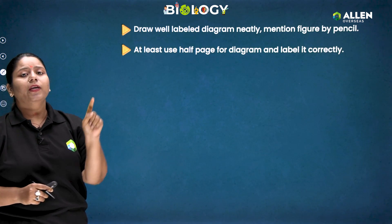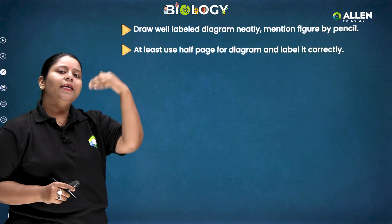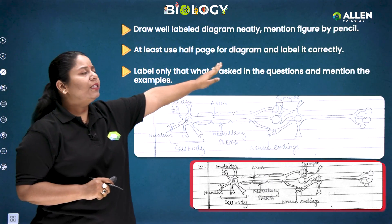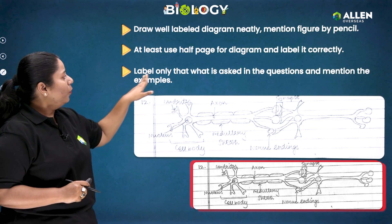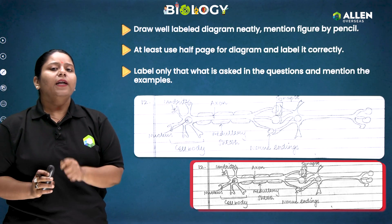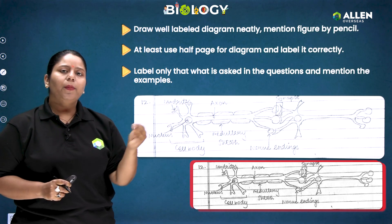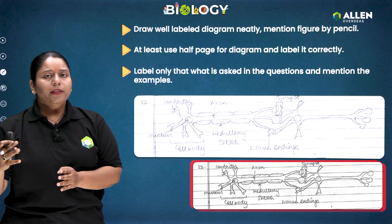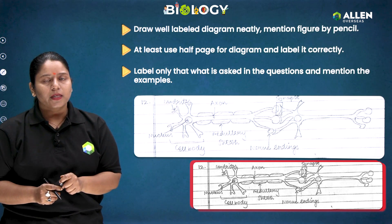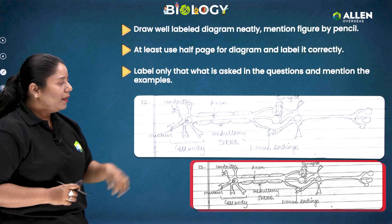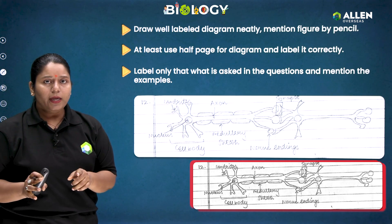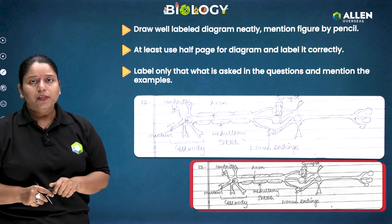Whenever you draw a diagram, label it neatly by pencil. Mention the figure name at the end of the diagram — not at the sides or above it. Use at least half a page for the diagram and label it correctly. Label only what is asked: if they ask you to draw the full diagram, label all parts; if they ask you to label only specific parts mentioned in the question, label only those parts. For example, a student drew the electrochemical transfer of nerve impulse neatly and labeled it nicely.